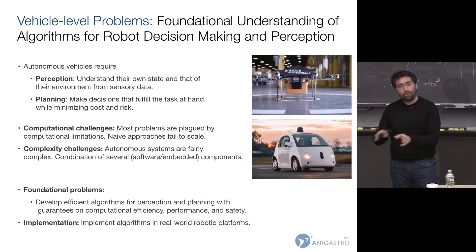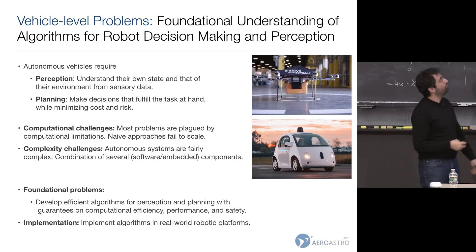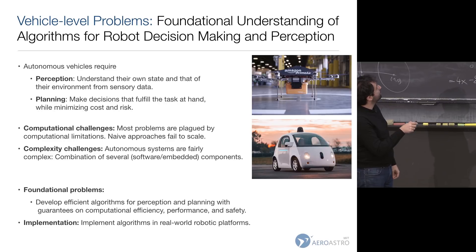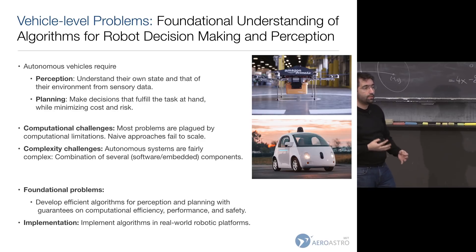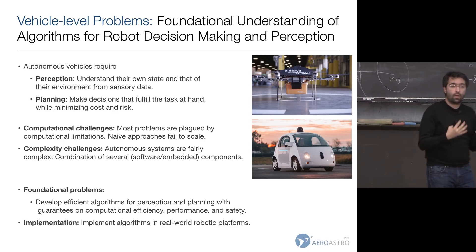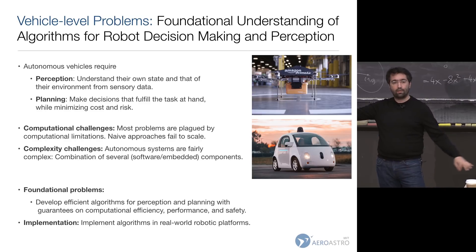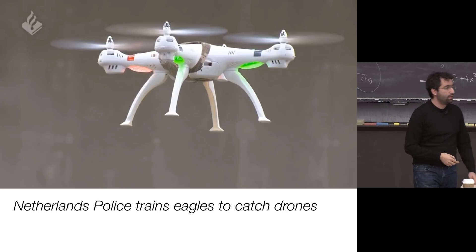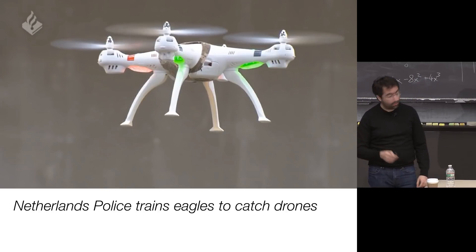Let me tell you about the vehicle-level and system-level problems, some of the crazy things we try to do. On the vehicle level, we're interested in all aspects of both perception and planning. Challenges are either computational complexity — very hard computationally — or the system becomes very complex and you need to figure that out. We're recently motivated by really fast and agile vehicles and how we can build those.